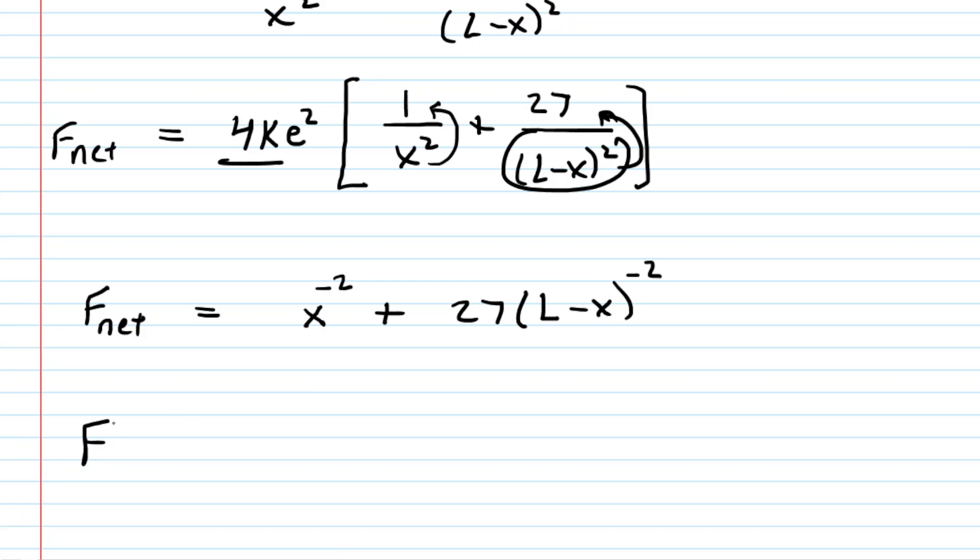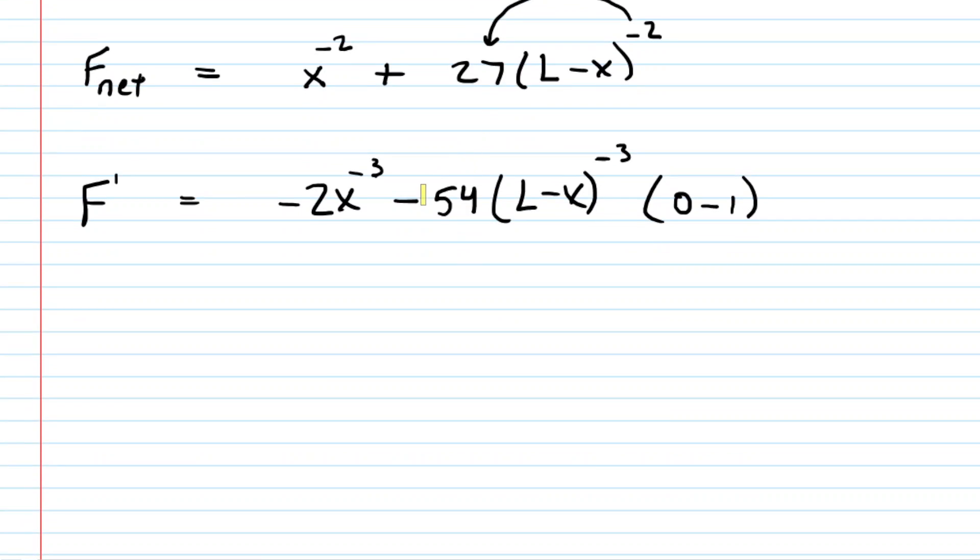We can next do the derivative. We're just going to call this f prime. We have some basic power rule right here. This is just going to have a derivative of negative 2 times x to the negative 3. Over here, it gets a little tricky. You have a chain rule. So you're going to multiply the 27 by the negative 2. This makes a negative 54. And then this is times the inside function, L minus x, subtract 1 to get negative 3. And then multiply by the derivative of the inside. The derivative of L is 0 because L is a constant, and then the derivative of minus x is a minus 1. So we basically now have a negative 54 times a negative 1. That becomes a positive 54.